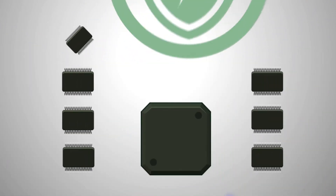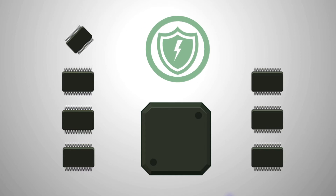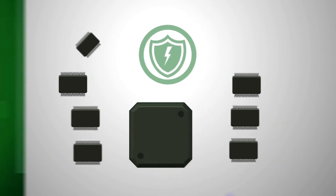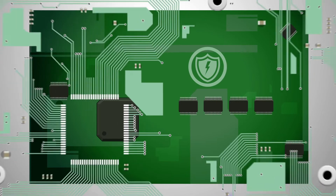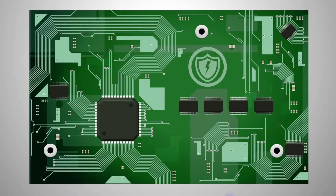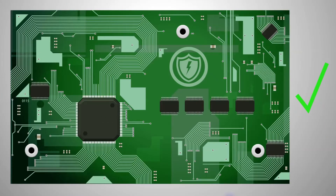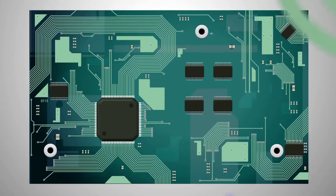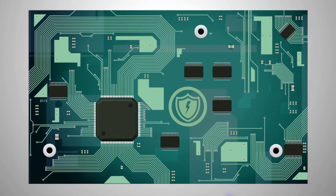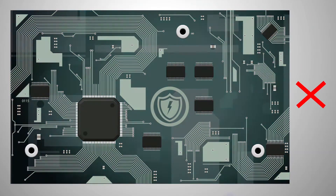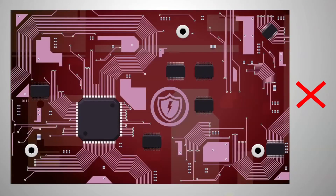Circuit protection should be specified as soon as the chipset or other fundamental components have been determined, allowing for proper protection devices to be selected and integrated in the design prior to starting PCB layout. Delaying this critical consideration can result in redoing the layout and less optimal device selection and location, leading to a less reliable and potentially unsafe design.